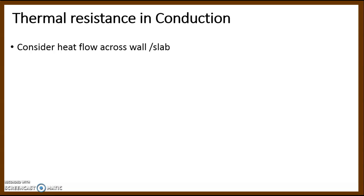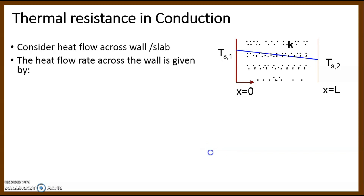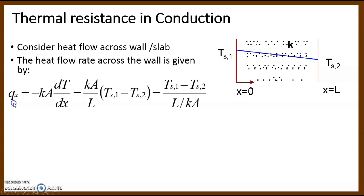Similarly, for thermal resistance in conduction, consider heat flow across a wall or slab. One side of the slab has temperature TS1 and the other side TS2, generating a temperature difference. The length of the slab is L and the thermal conductivity of the material is K. Using Fourier's law, Q_x equals minus K·A·dT/dx. Substituting dx = L and rearranging, we get Q_x equals (TS1 minus TS2) times AK divided by L.